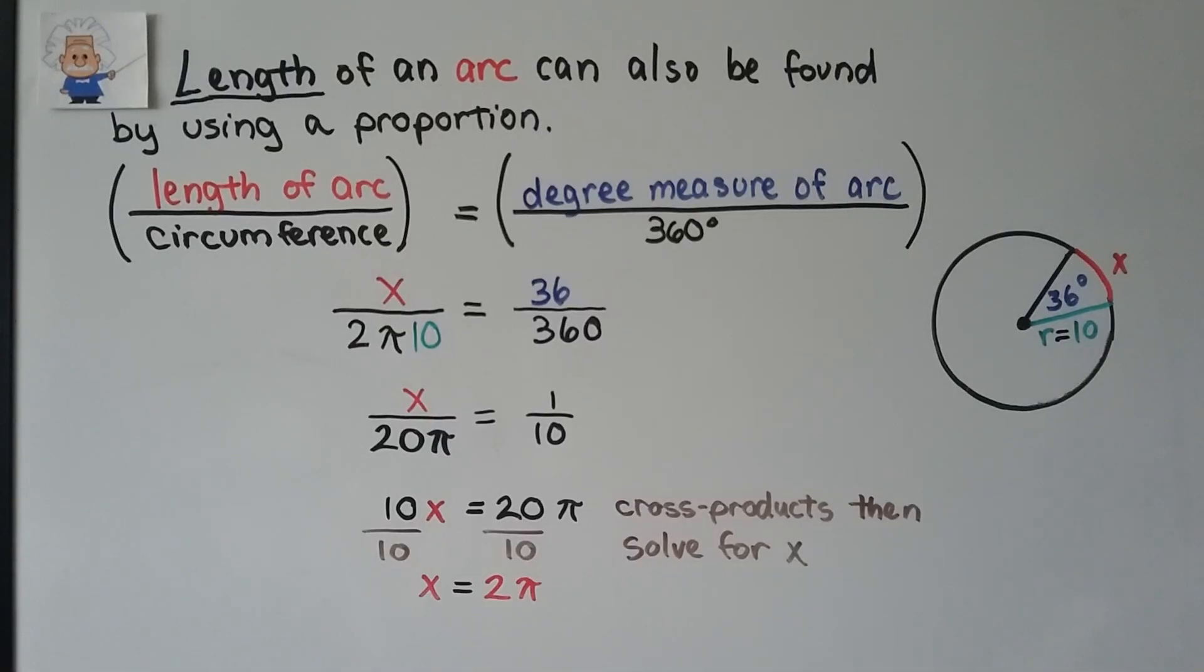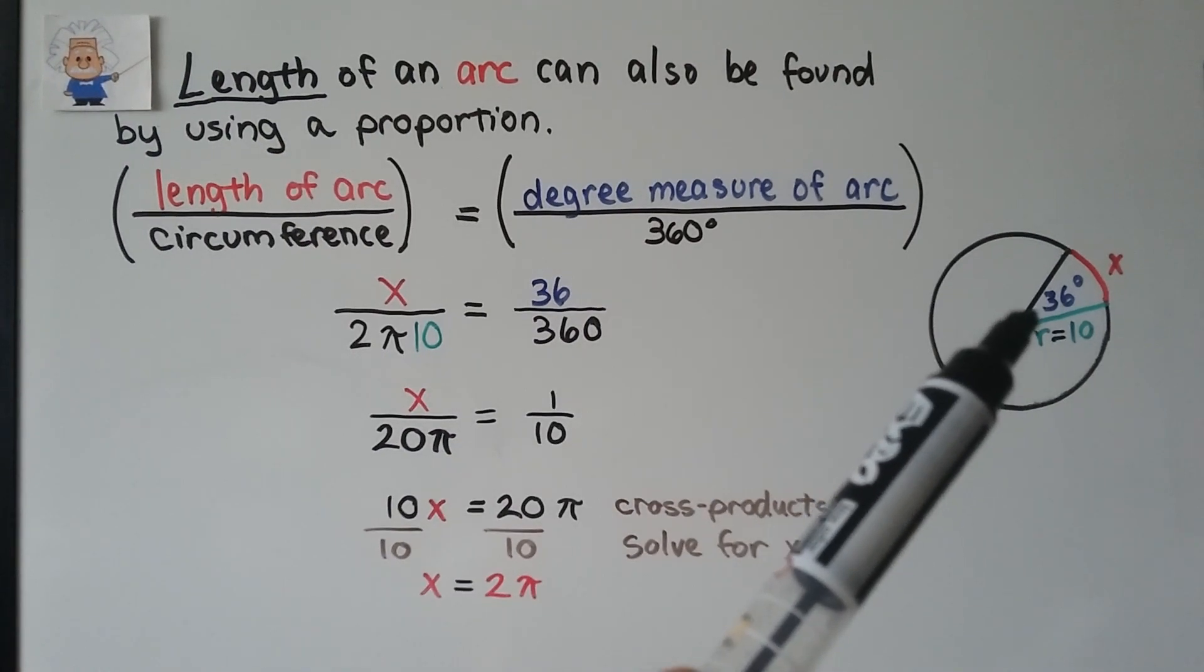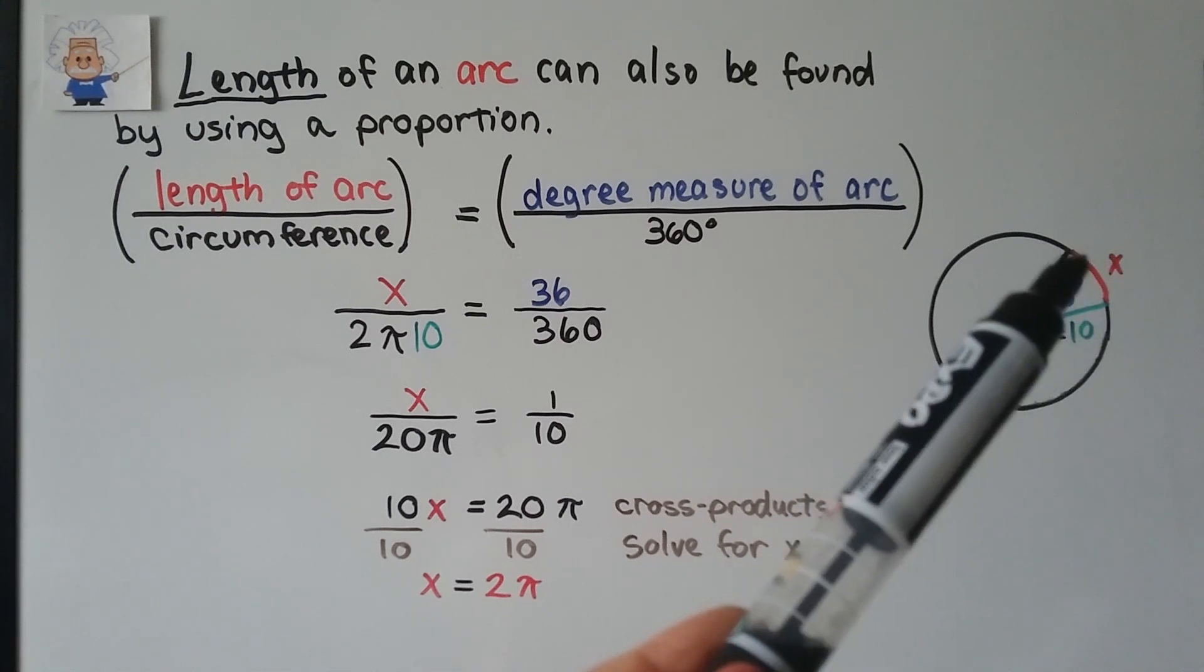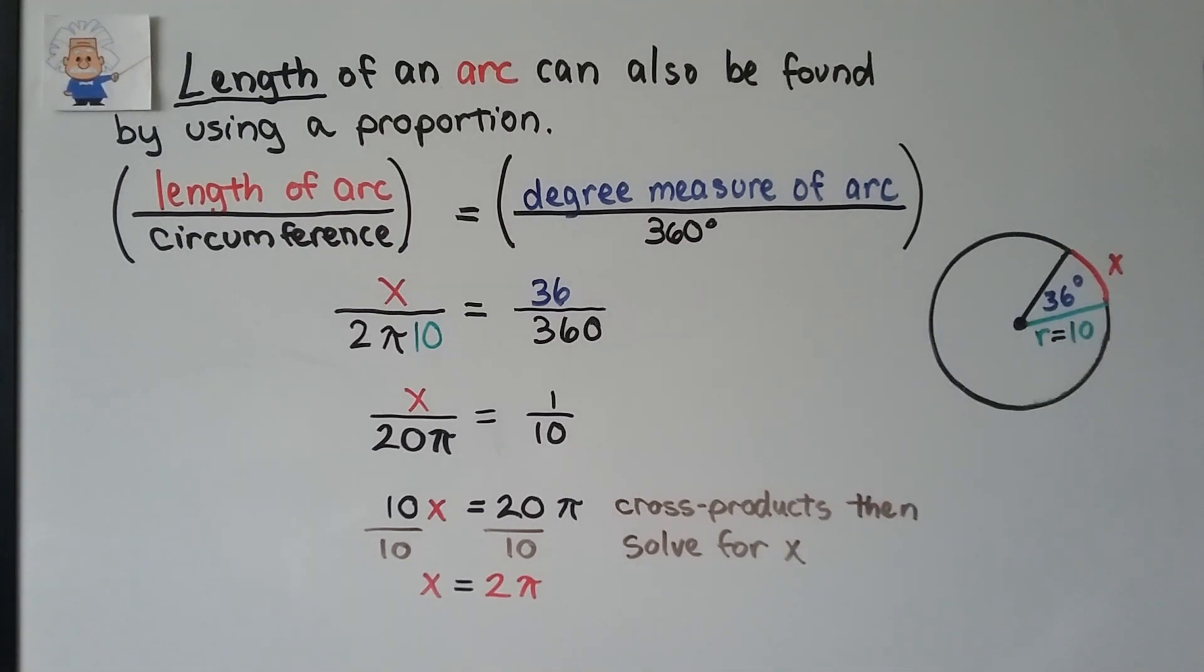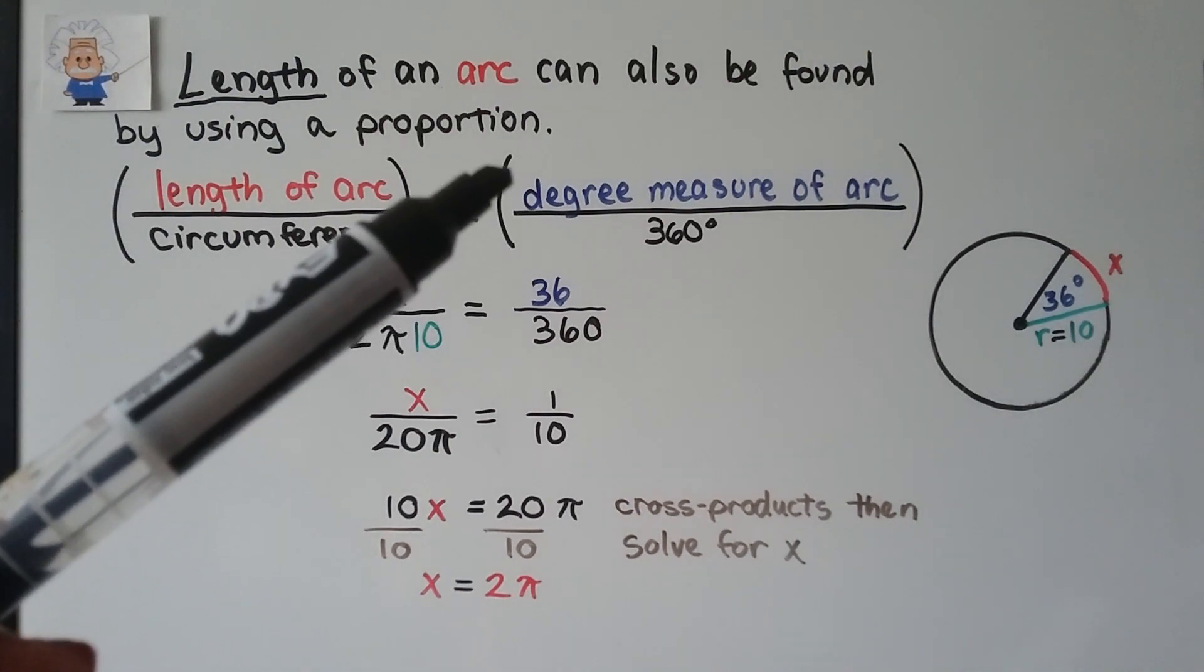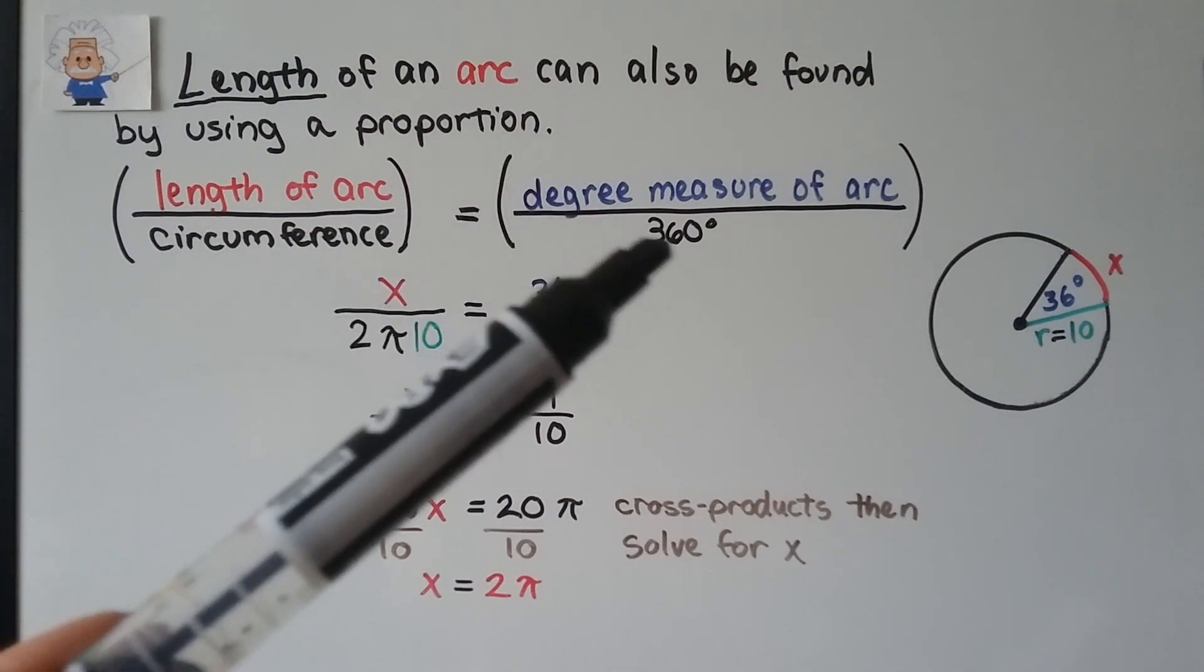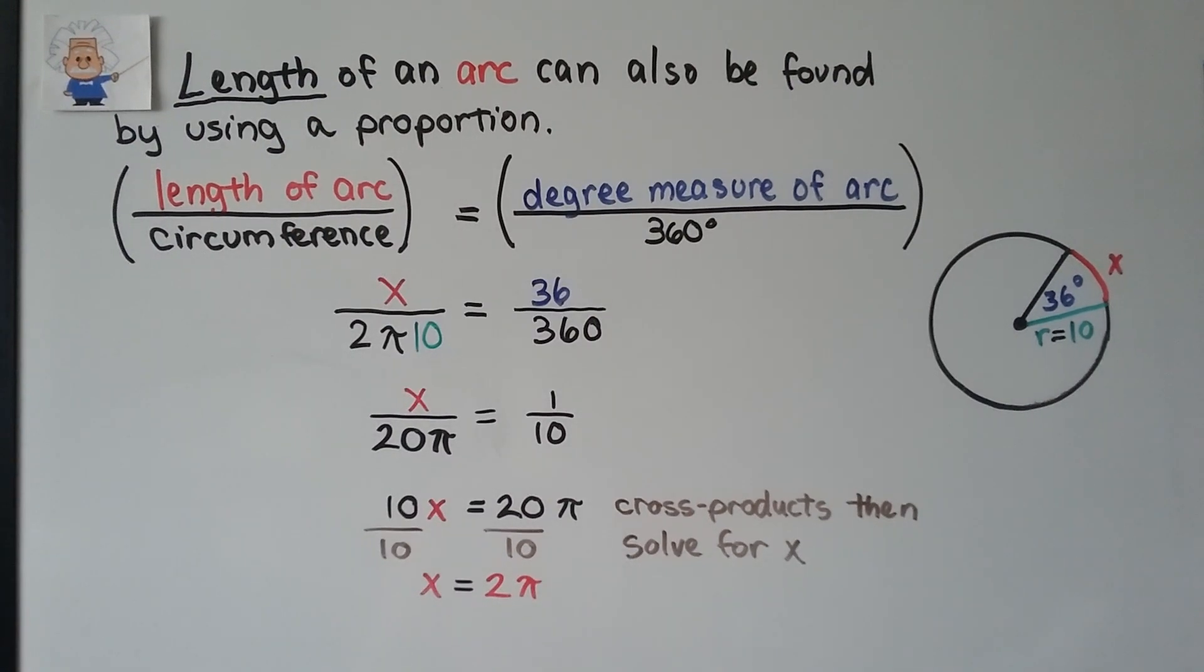So continuing on with our bonus information, the length of an arc can also be found by using a proportion. If we know the radius is 10 and the central angle is 36 degrees, we can find this length, X, by putting the length of the arc divided by the circumference equal to the degree measure of the arc, that central angle, divided by 360 degrees.